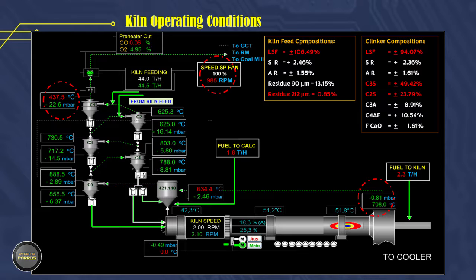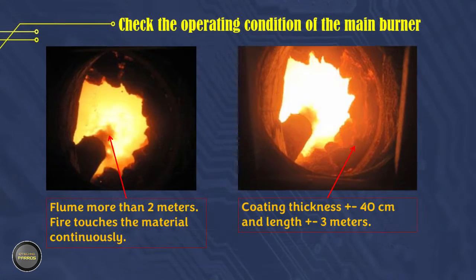The third issue is fuel consumption in the main burner and calciner burner. The fuel consumption in the main burner is 2.3 tons per hour or 60%. It is recommended for preheaters that use tertiary air duct to have 40% fuel consumption in the main burner and 60% in the calciner burner. Checking the burner flame shape and kiln operating conditions in the field revealed a large and long flame touching the material continuously, with a thick coating of more than 40 centimeters at the kiln outlet, about 3 meters long.